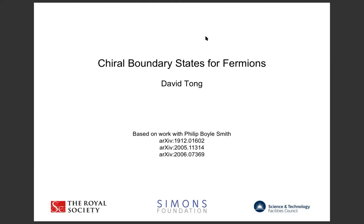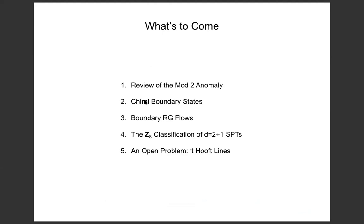Here's what we have ahead of us. I'm going to start by telling you about a very simple anomaly in quantum mechanics — possibly even the simplest anomaly in quantum field theory. It's what's called a mod-2 anomaly. I'll explain how this mod-2 anomaly is related to boundary conditions. Then I'll tell you about these boundary states. The main part of the talk is about RG flows between different boundary states.